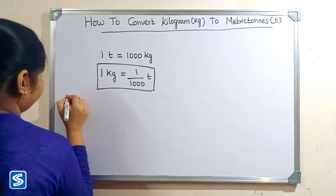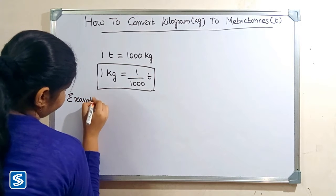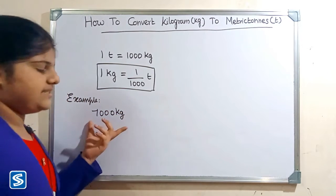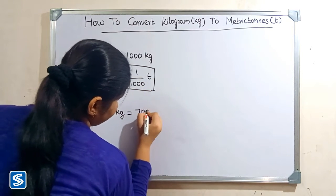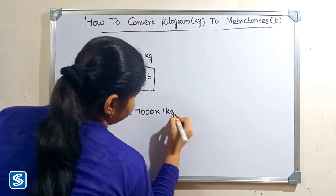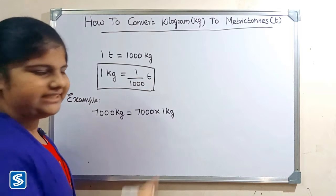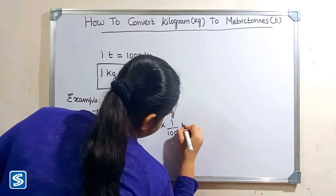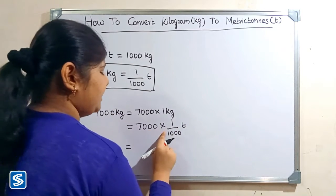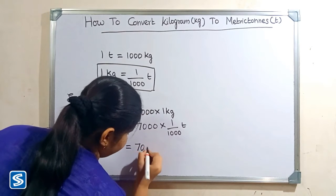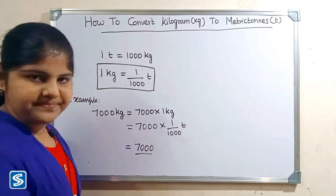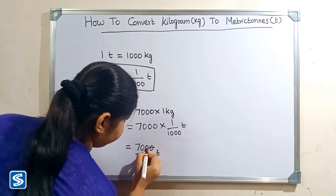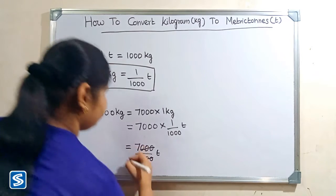Now we will take some examples. For example, we can take 7000 kilograms. 7000 kilograms can be written as 7000 multiplied by 1 kilogram. Now we substitute 1 by 1000 tons in the place of 1 kilogram, so 7000 multiplied by 1 by 1000 tons. 7000 multiplied by 1 will be 7000, so 7000 by 1000 tons. Here the zeros get cancelled, so when we divide 7000 by 1000 our answer will be 7 tons.